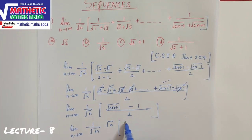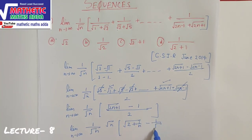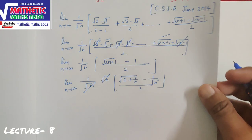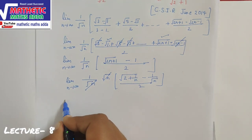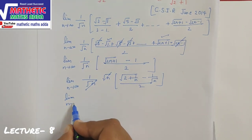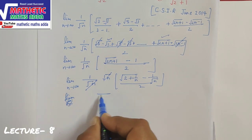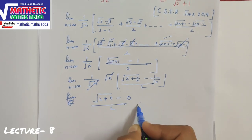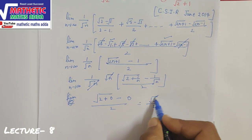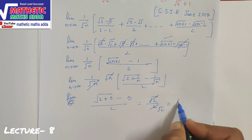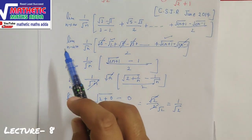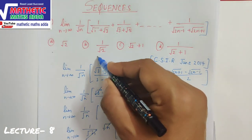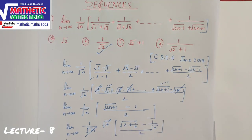Taking √n common, we get (1/√n) × (√n × √(2 + 1/n) − 1/√n) / 2. The √n cancels, and applying the limit as n→∞, the 1/n and 1/√n terms go to 0. We get √2 / 2, which simplifies to 1/√2. So the answer is 1/√2, which is the second option.